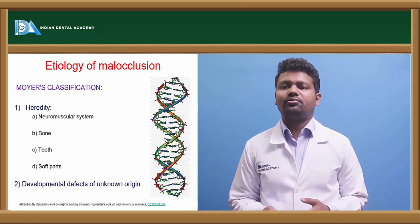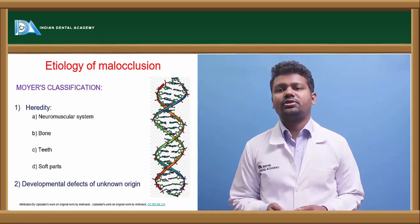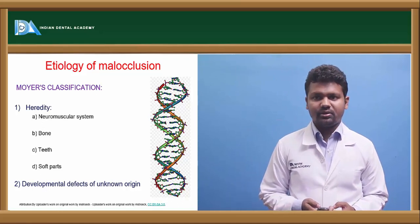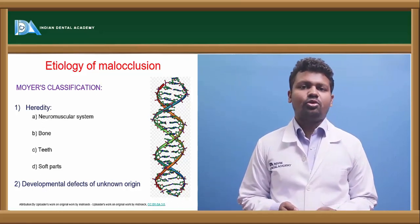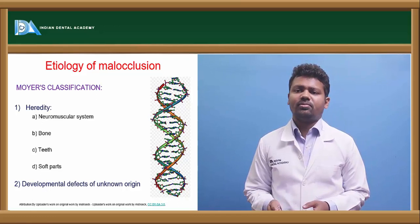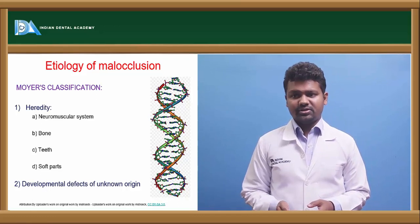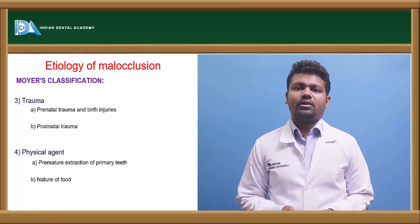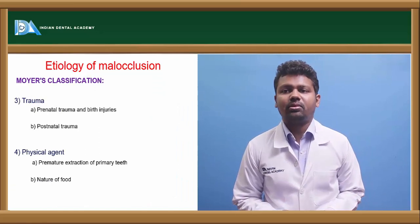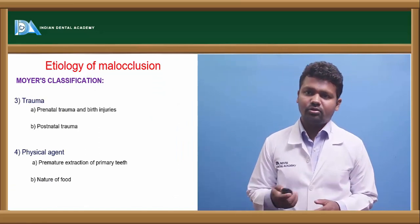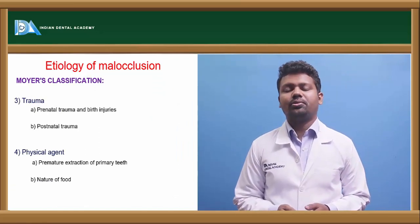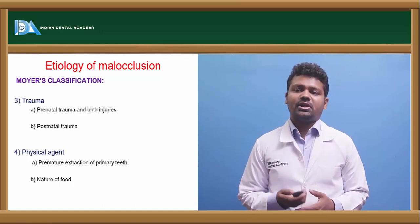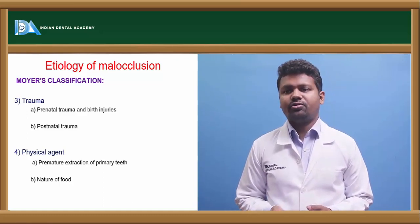When it comes to etiology of malocclusions, Moyers classification is first based on hereditary factors: the neuromuscular system, bone, teeth and soft parts, and developmental defects of unknown origin. Then there is trauma — prenatal trauma, birth injuries, and postnatal trauma. Fourth is due to physical agents such as premature extraction of primary teeth and the nature of food.